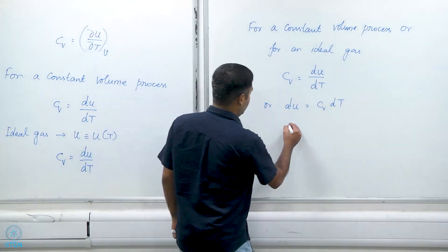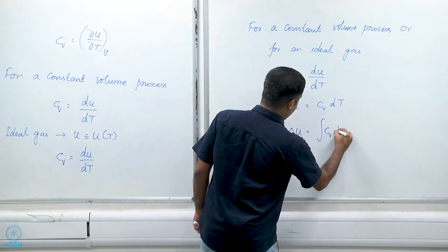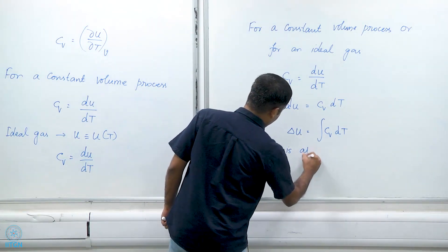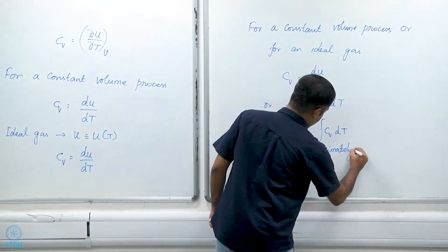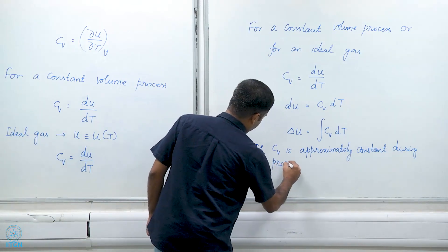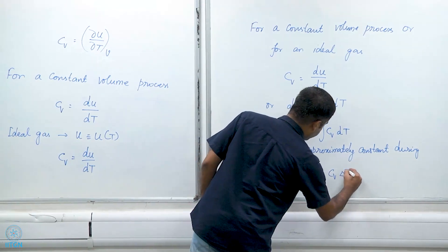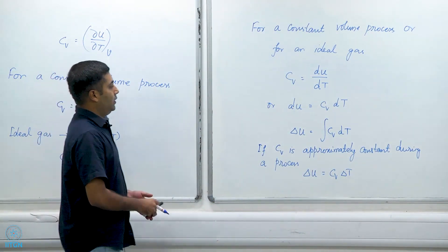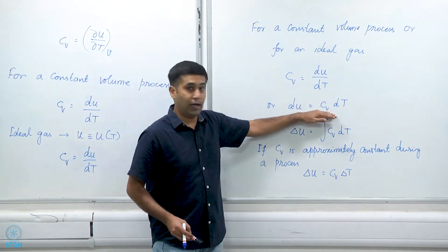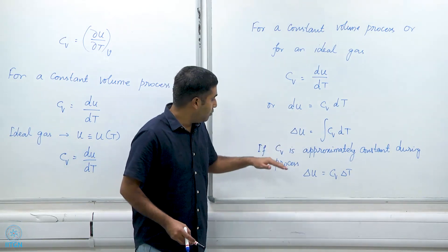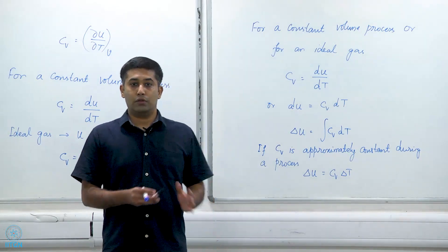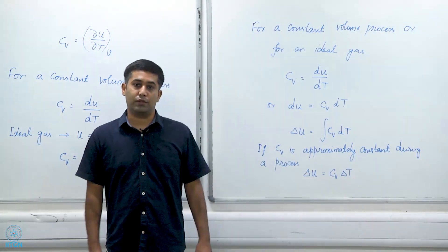I can write ΔU as the integral of Cv dt. And if Cv remains more or less constant, then I can write ΔU = Cv ΔT. It is important to remember this chain of arguments — this last step is valid only if Cv does not change by much, or remains constant throughout the process.